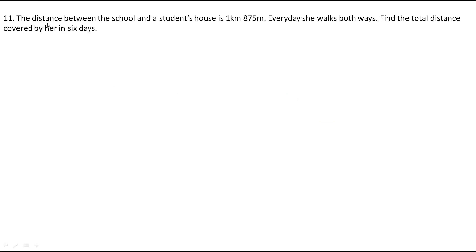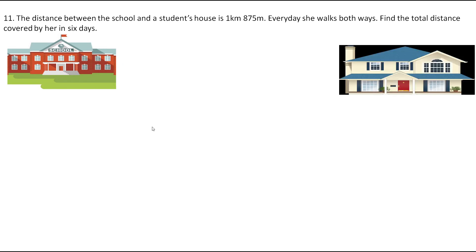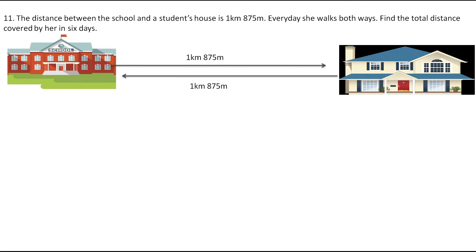The next question: the distance between the school and the student's house is 1 kilometer 875 meters. Every day she walks both ways. Find the total distance covered by her in six days. The distance from house to school is 1 km 875 m, and she comes back the same distance. We need to find the total distance covered in six days, so first we find the distance covered in one day by adding both ways.